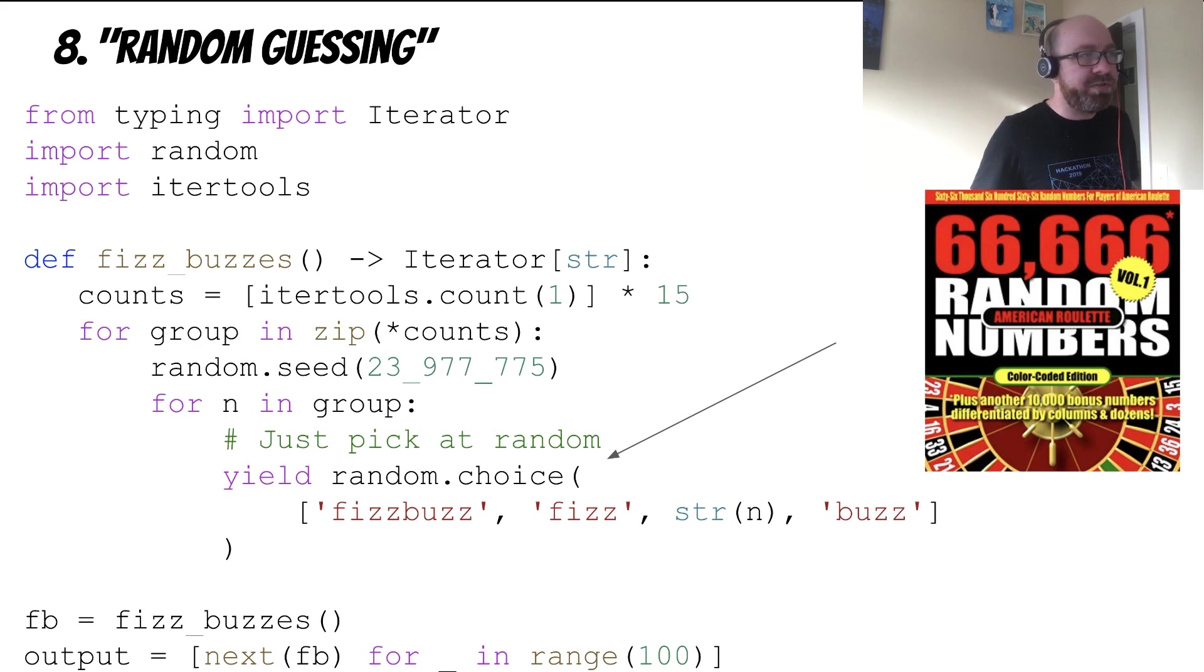You can see that there's no modulus, no divisibility. There's just this call to random.choice, which picks a random element of these possible outputs. And surprisingly, this works. I encourage you to try it yourself if you don't believe me, but I promise it works. And it's pretty interesting why. So check it out.